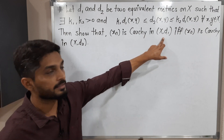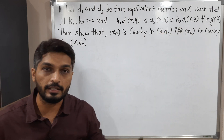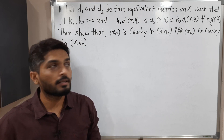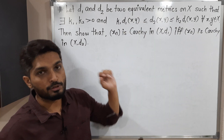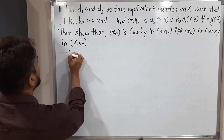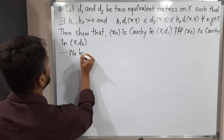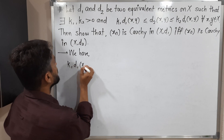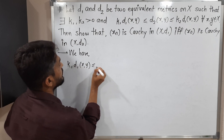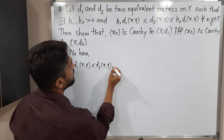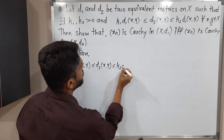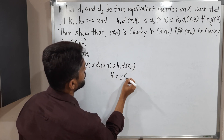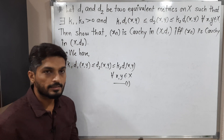What we have to prove is: if any sequence {xn} is Cauchy in (X,d1) if and only if it is Cauchy in (X,d2). We need to prove this in both ways. The key inequality — k1·d1(x,y) ≤ d2(x,y) ≤ k2·d1(x,y) for all x,y in X — I am calling it as (1), and we will use it later.